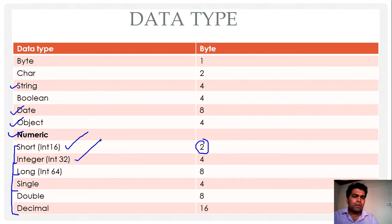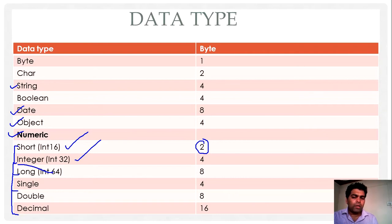Basically, all languages supported by .NET follow the same type system — the Common Type System. Whatever type you use, in VB.NET you write 'Integer', while in C# you write 'int' to represent integer type. But after compilation, both are converted into the IL type, that is Int32. That is a very important concept.